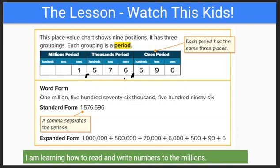We can read this number. If you know how to read the commas, you can read the number, and if you know how to read a three-digit number, you can read any number. So let's read this together. This is one million, five hundred seventy-six thousand, five hundred ninety-six.